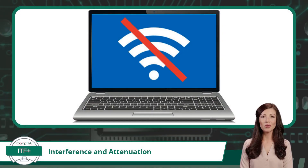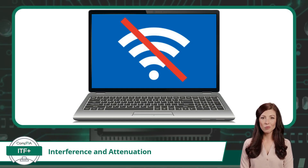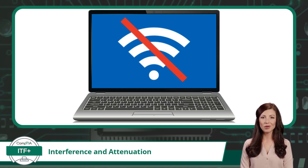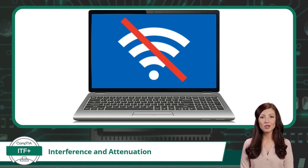How does this topic fit with our current exam objective covering wireless networks? When electromagnetic interference becomes too great, it can lead to a disruption in wireless communications and cause weaker than expected broadcast signals. You should ensure that EMI sources are either removed or at least kept to a minimum if you want reliable wireless communications.